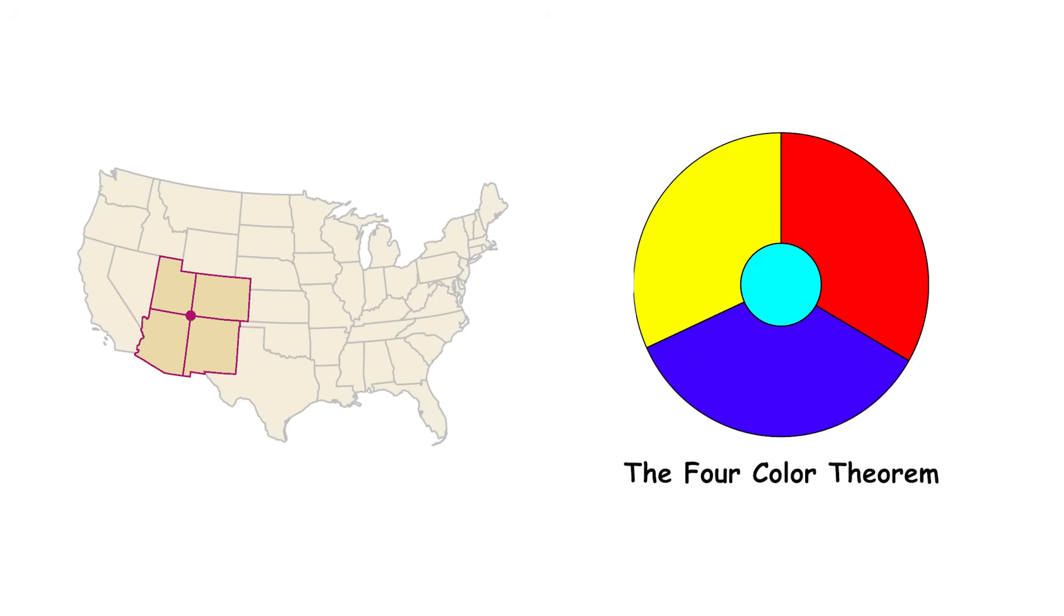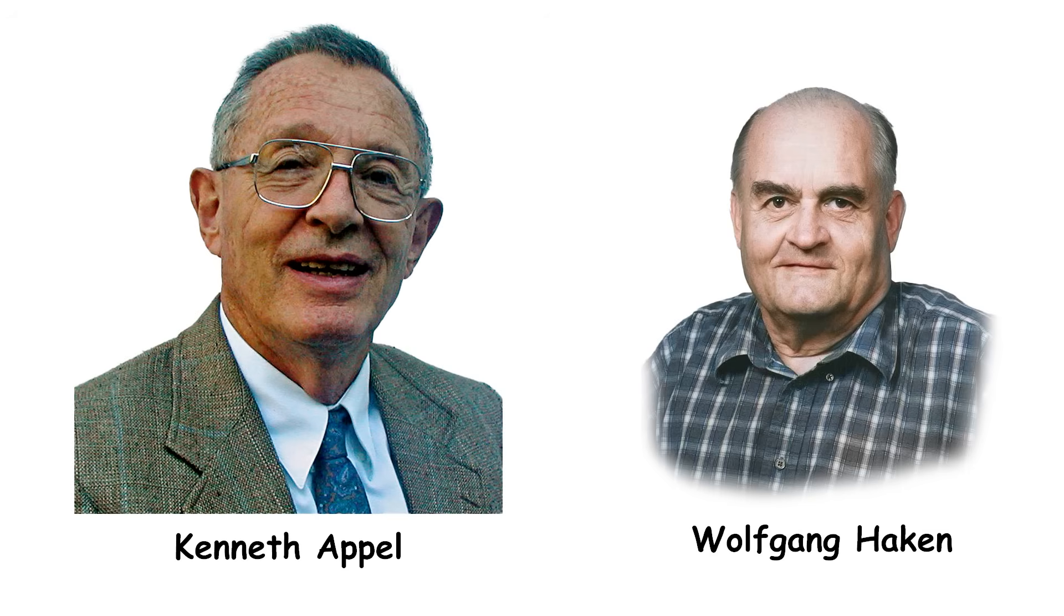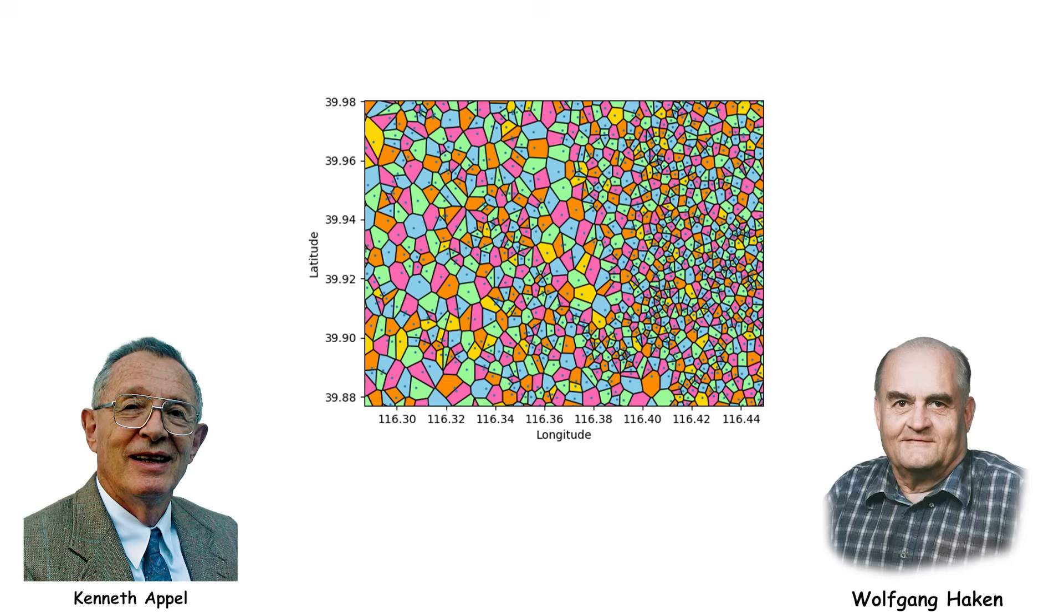Proving this theorem was very difficult. In the 1800s, mathematicians showed you could do it with five colors, but getting it down to four colors took until 1976. Two mathematicians, Kenneth Appel and Wolfgang Haken, figured out a way to break the proof into a large number of specific cases around 2000. With the help of computers, they checked each one of these cases one by one. This was a new kind of proof that relied partly on computer calculations.